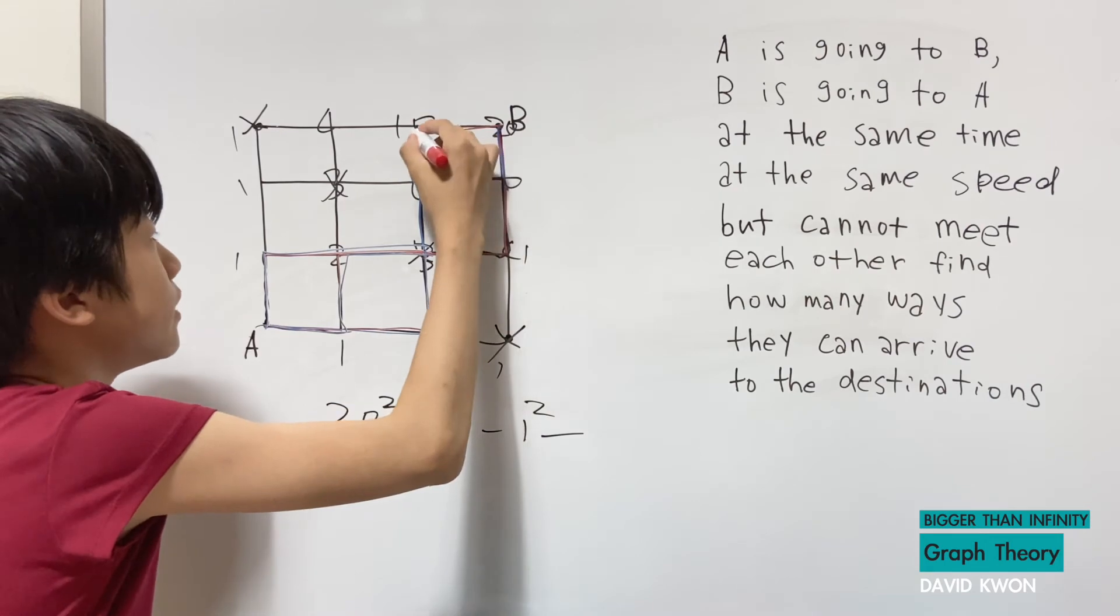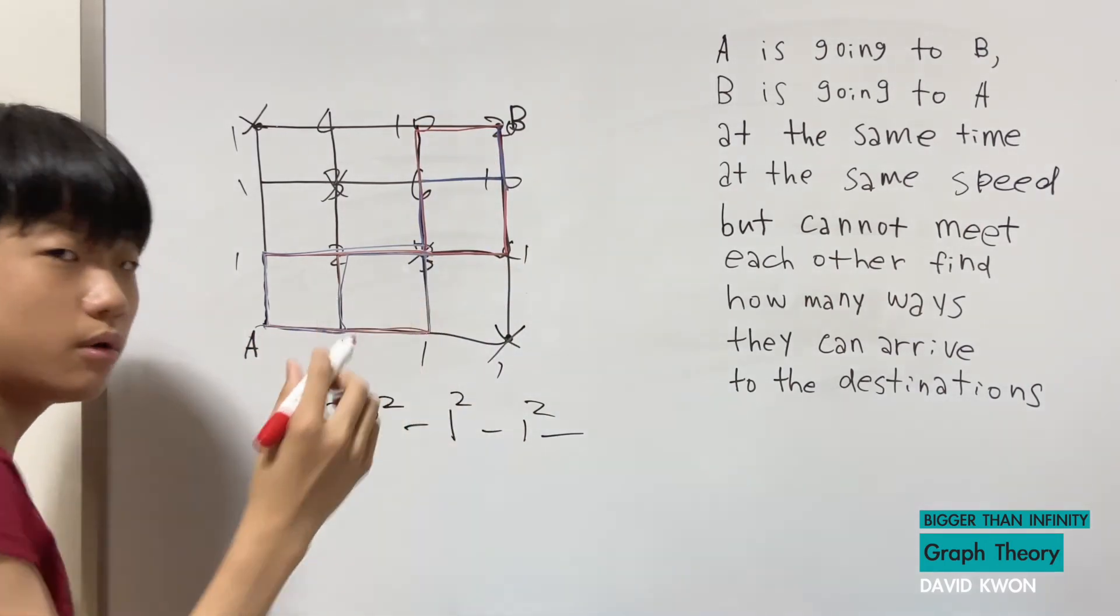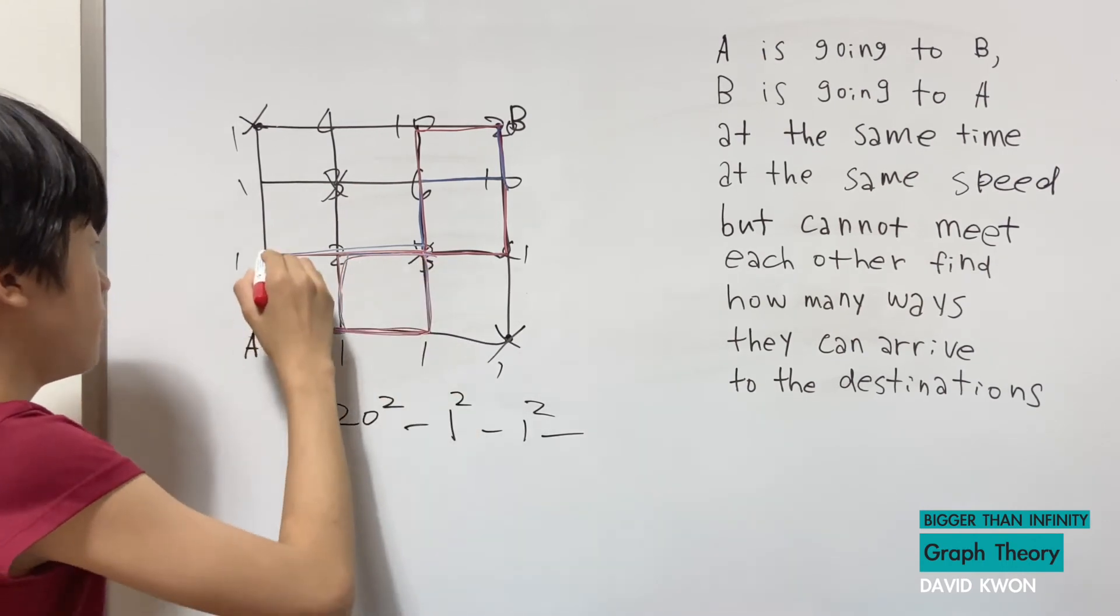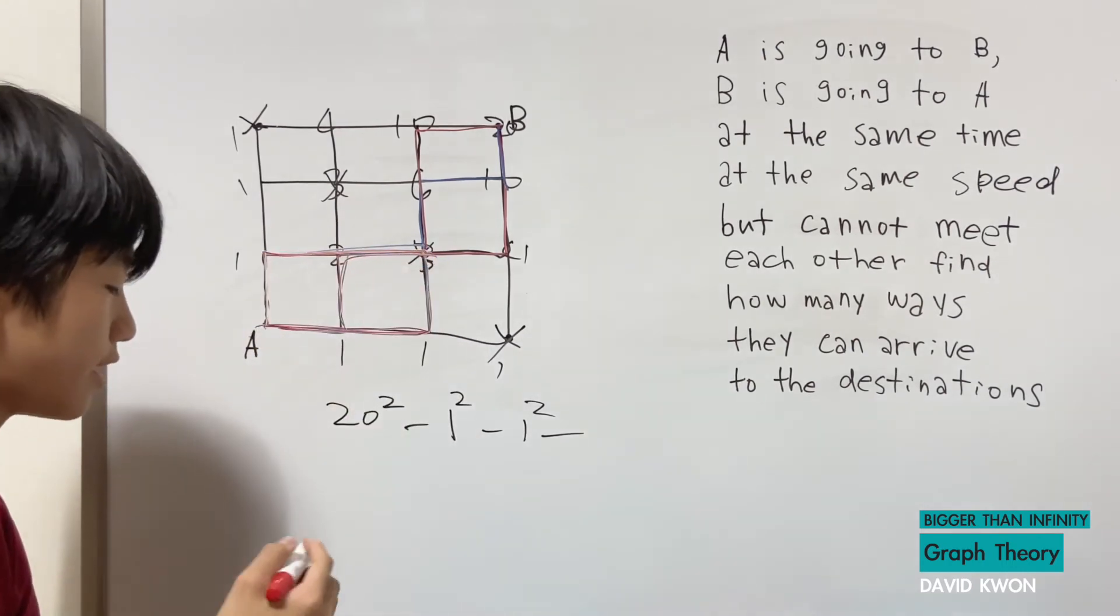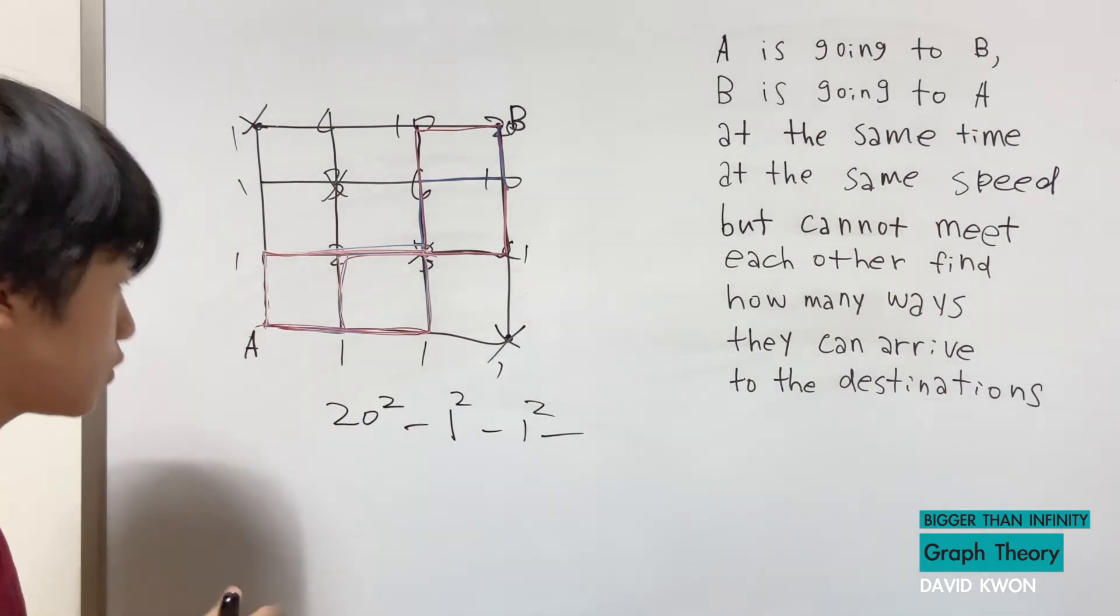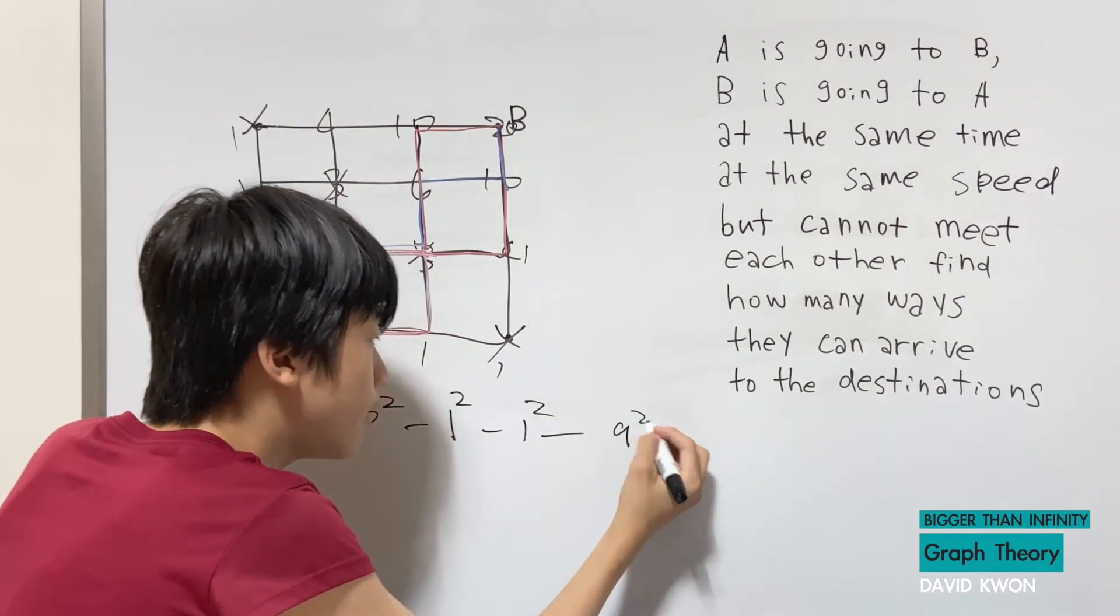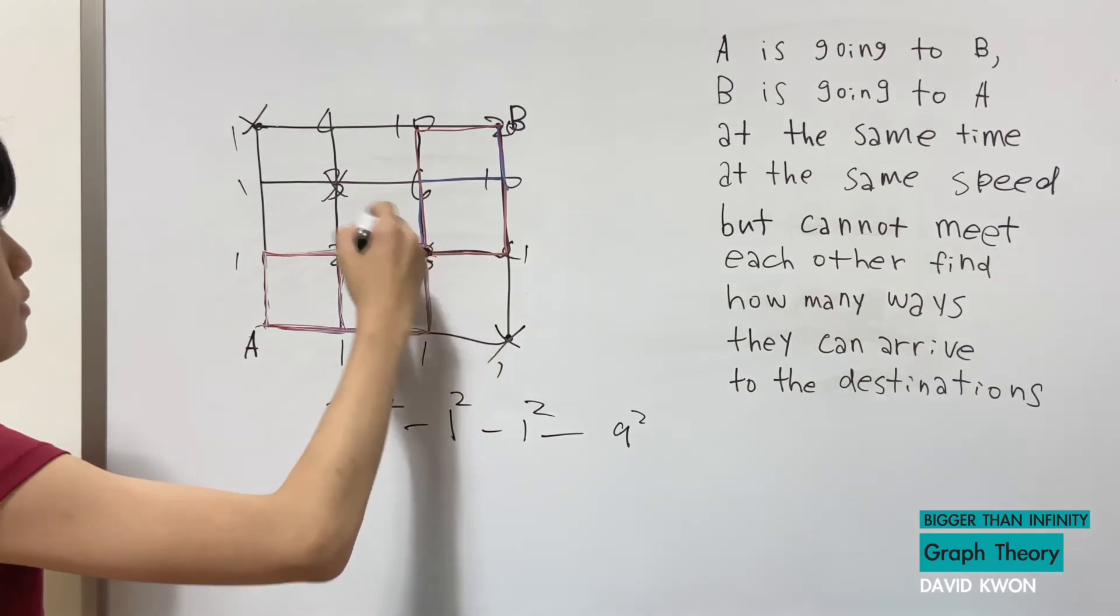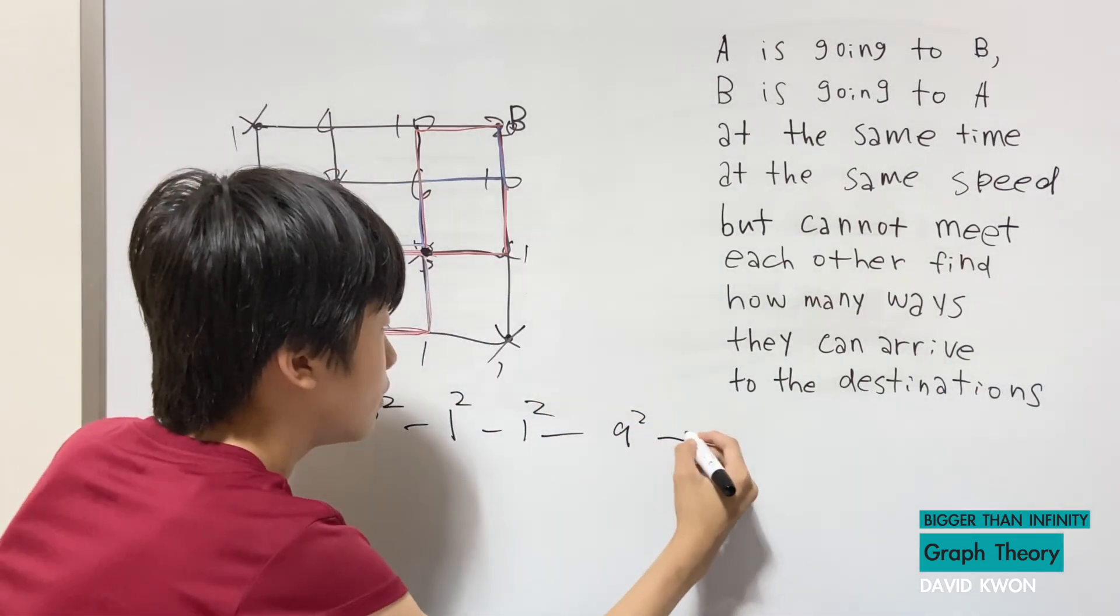Now if B goes this way it can still go through the same way here here and here that was total of nine